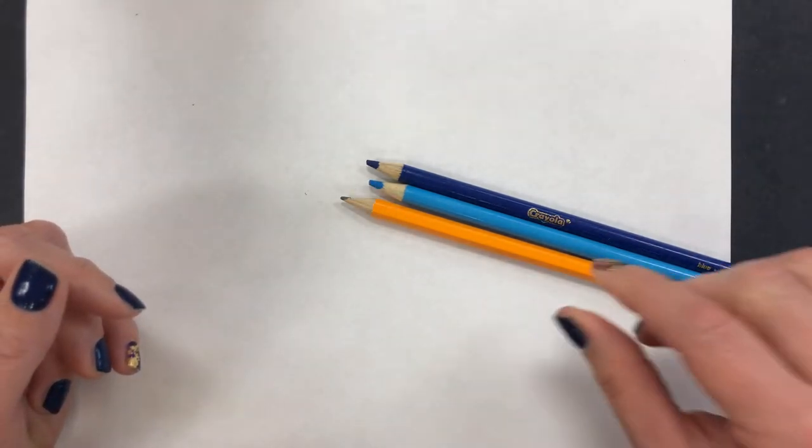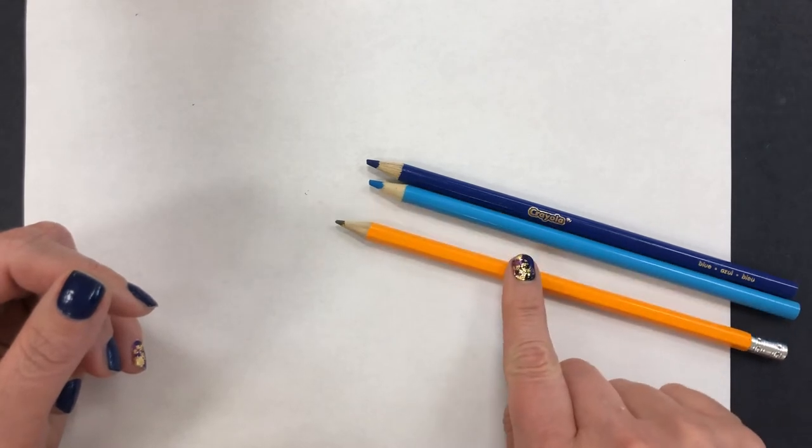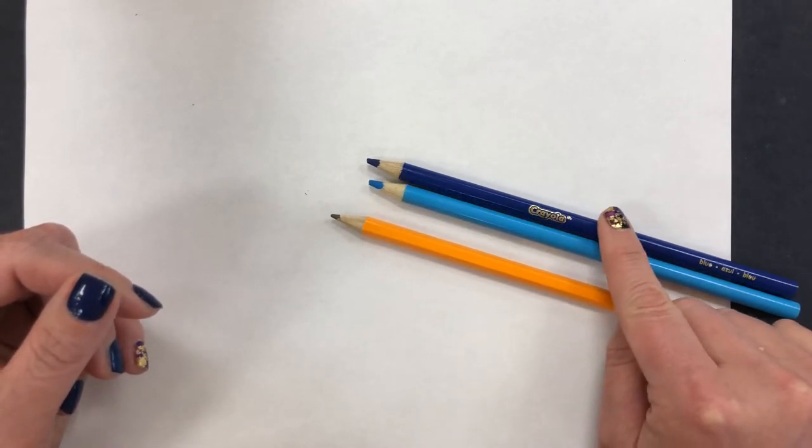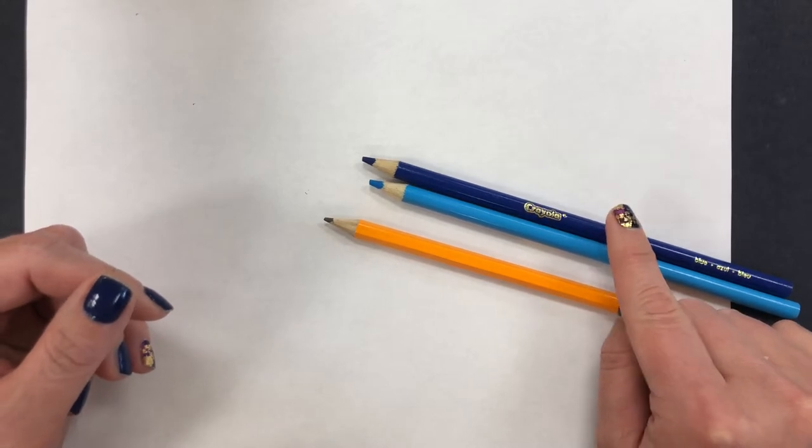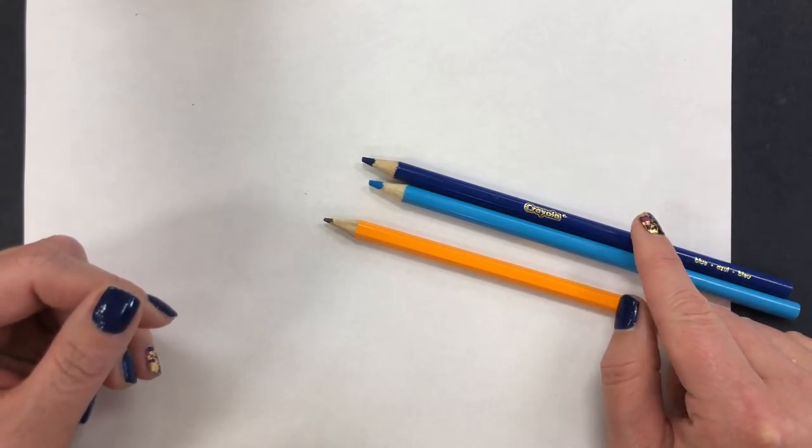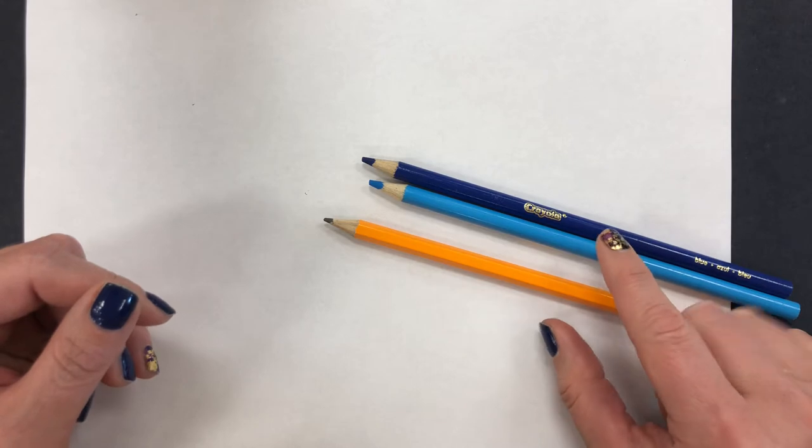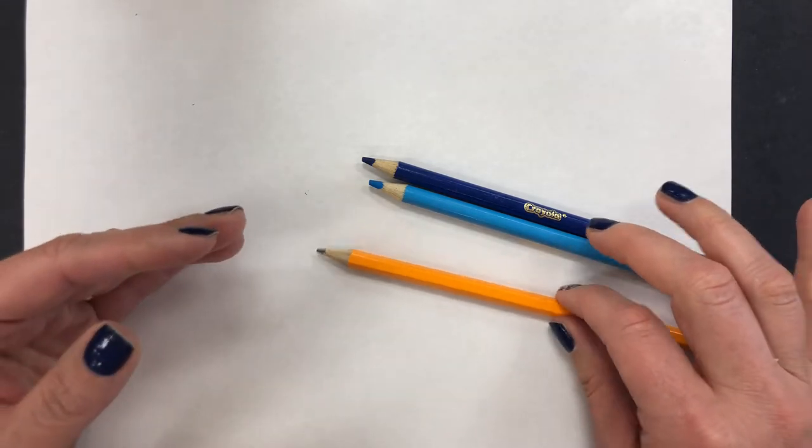For this lesson I'm going to show you blending with a regular number two pencil and some colored pencil as well. I'm going to assume that you don't have a full set of artist pencils, but if you do have them you can try blending hard or soft pencil together.